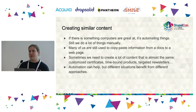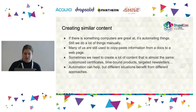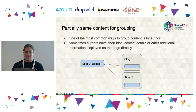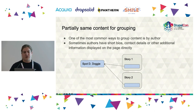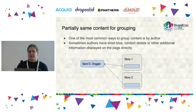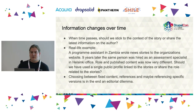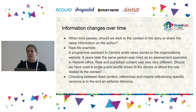There are different ways to automate or semi-automate things. Some cases where we use this kind of content replication are when we have partially same content used for grouping pieces — like using taxonomy terms to group blog posts or articles. Sometimes we include short biographies, contact details, or other additional information about the author — that's using the same content over and over.